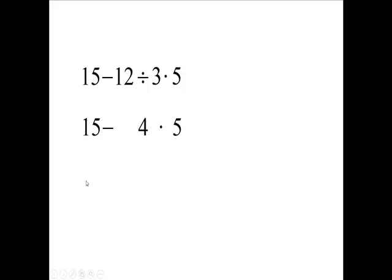Bring down the 15 and the subtraction sign. 4 times 5 is 20. And if you have $15 and you spend $20, you are $5 overdrawn.